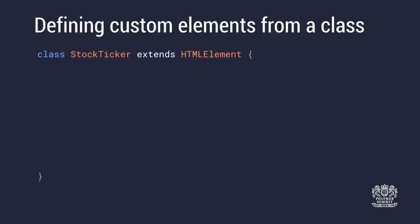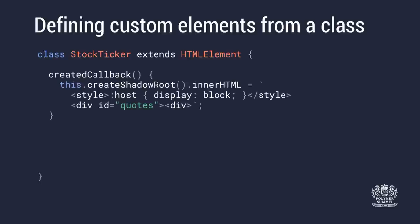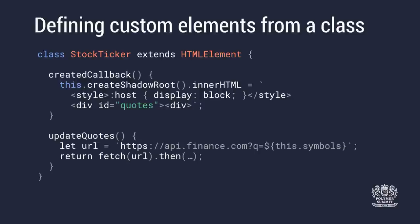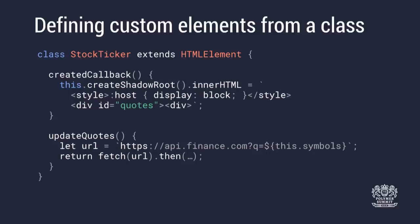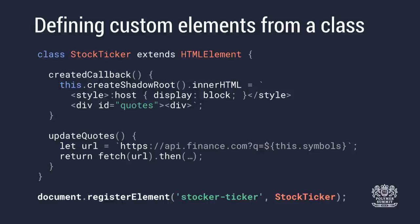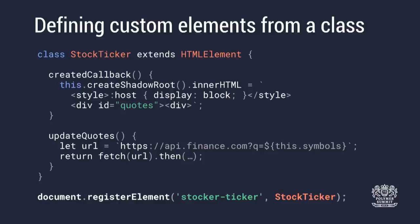We can use classes to create custom elements. The way you define a custom element using classes is to extend HTMLElement — extending the native DOM HTML element. Instead of a constructor, you use the custom elements createdCallback, where you set up your Shadow DOM and initialize properties. In this example I'm creating a shadow root and setting its innerHTML with some styling and placeholder markup for a stock ticker element, then defining an updateQuotes method. To register that element with the browser, it's no different than normal — you still call document.registerElement with the tag name, but instead of passing a prototype or object, you pass the class name.